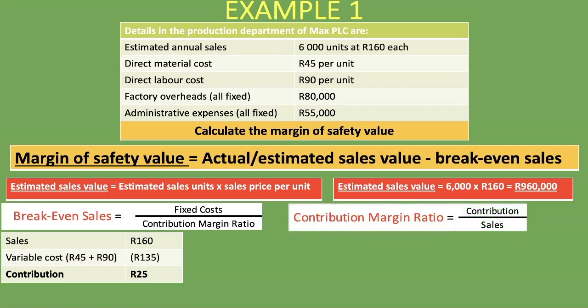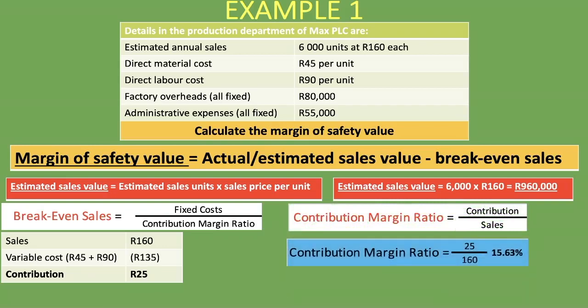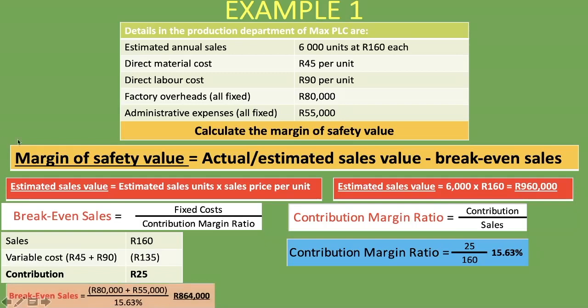Now that we have our contribution of 25 rand, let's calculate the contribution margin ratio: 25 rand divided by 160 rand gives us 15.63%, or 0.1563 in decimals. We have our fixed costs of 80,000 rand for factory overheads and 55,000 rand for administrative expenses, and with our contribution margin ratio of 15.63%, we can calculate our break-even sales, which is 864,000 rand.